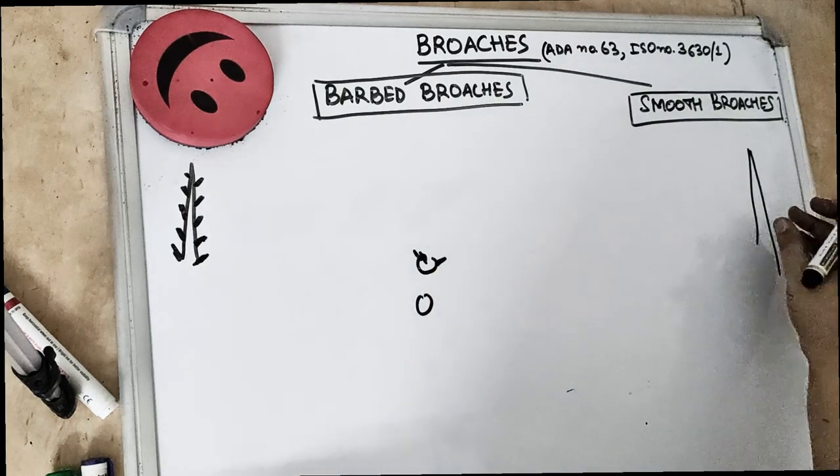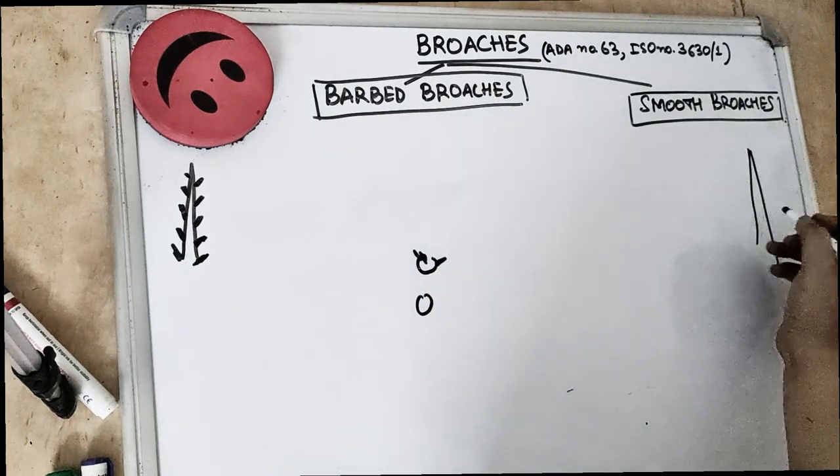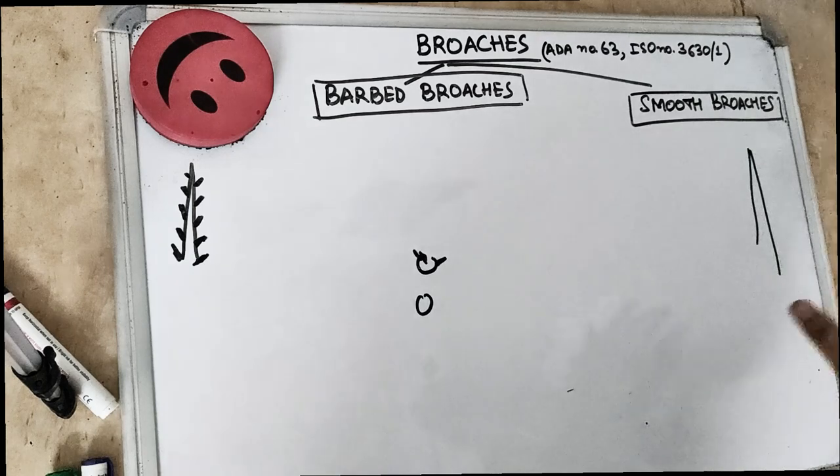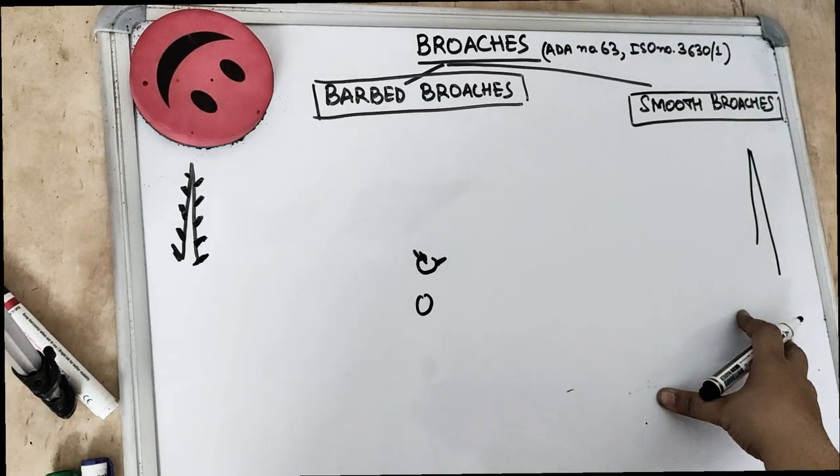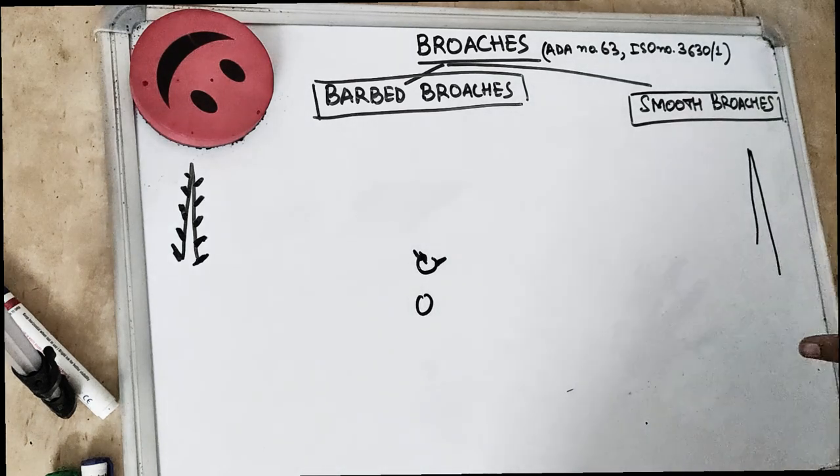And these smooth broaches, they are smooth. They are without the barbs, without the spikes. They are made up of carbon steel and they are less likely to collapse in the fine canal and they are used to check the patency of the canal.